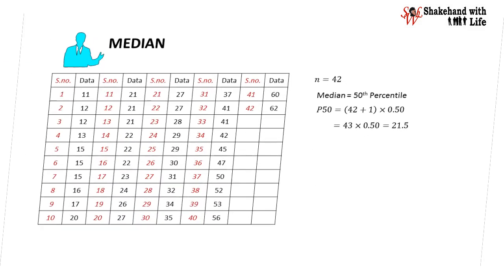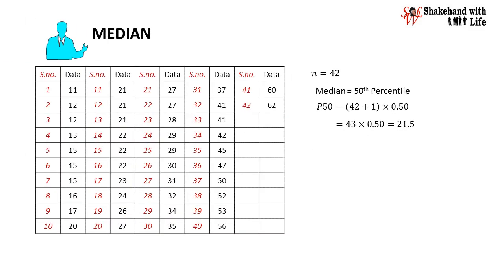First, we will find the median of the data set. The number of the data values n is 42. The median is 50th percentile, hence P50 is equal to 42 plus 1 multiplied 0.50 or 43 multiplied 0.50 and we get 21.5. Now, the data value in position 21.5 is 27, hence the median of the data value is 27.